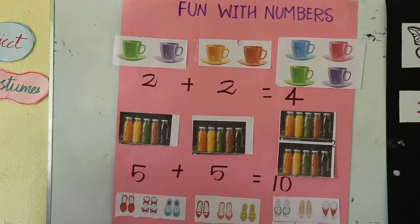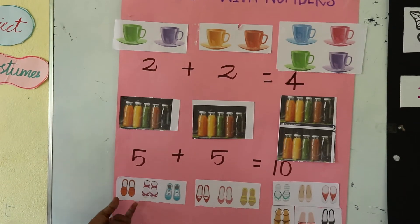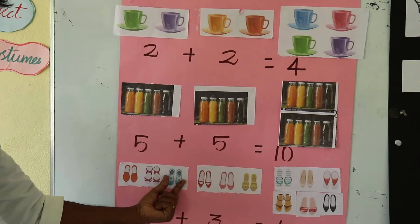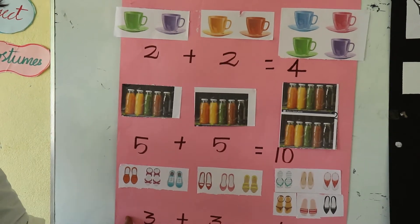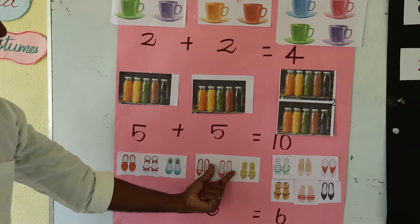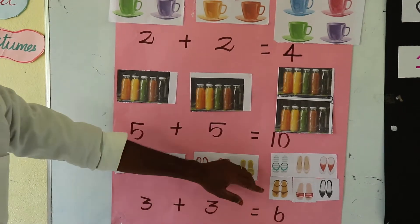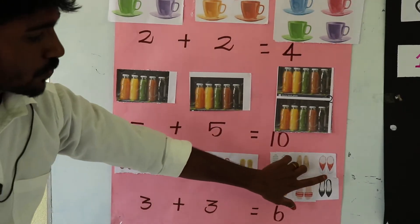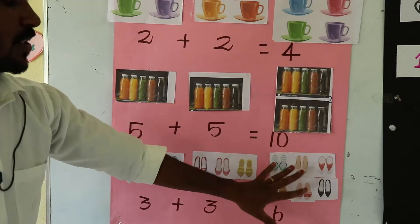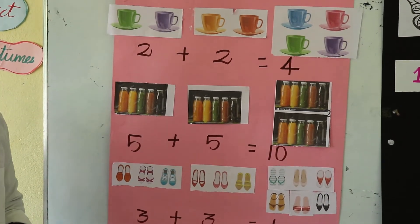Then last one, how many cups are there? 1, 2, 3. So answer 3. Next one also, 1, 2, 3. So 3 plus 3 is equal to 1, 2, 3, 4, 5, 6. So 6 pair of shoes.